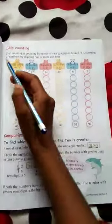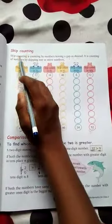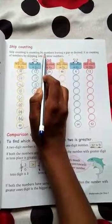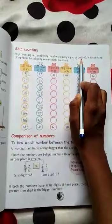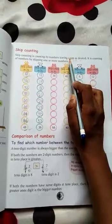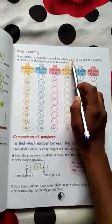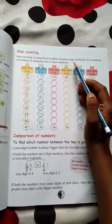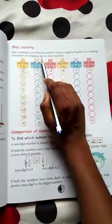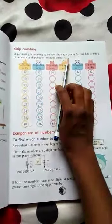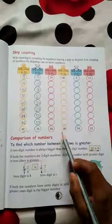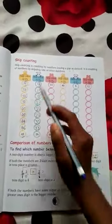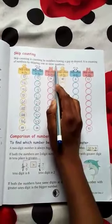So kids, you have read number 9, skip counting. Skip counting is counting by numbers leaving a gap as desired. It is counting of numbers by skipping one or more numbers. One or more numbers means one or more than one number.